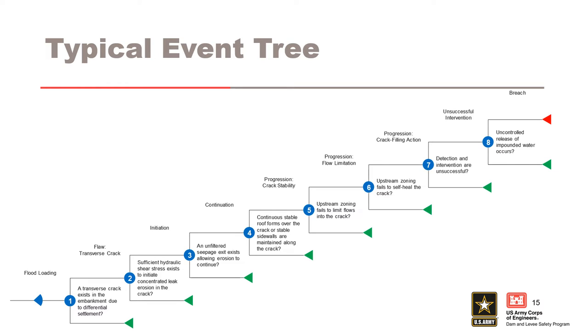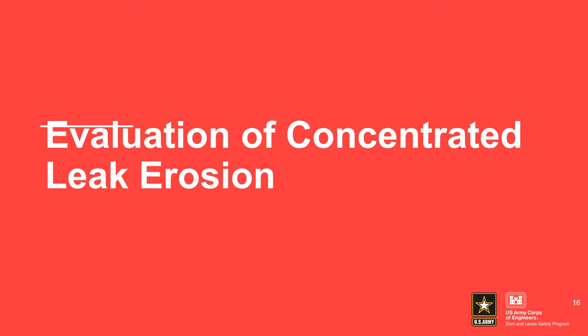Here's the typical event tree for concentrated leak erosion. This section will step through each node in the event tree, starting with the flaw node. One note up front: we're going to skip over the intervention node during this presentation, as we have another case history that deals specifically with intervention. Let's work through this internal erosion incident at Worcester Dam similar to how we would work through any CLE potential failure mode during a risk assessment, by stepping through a typical CLE event tree.